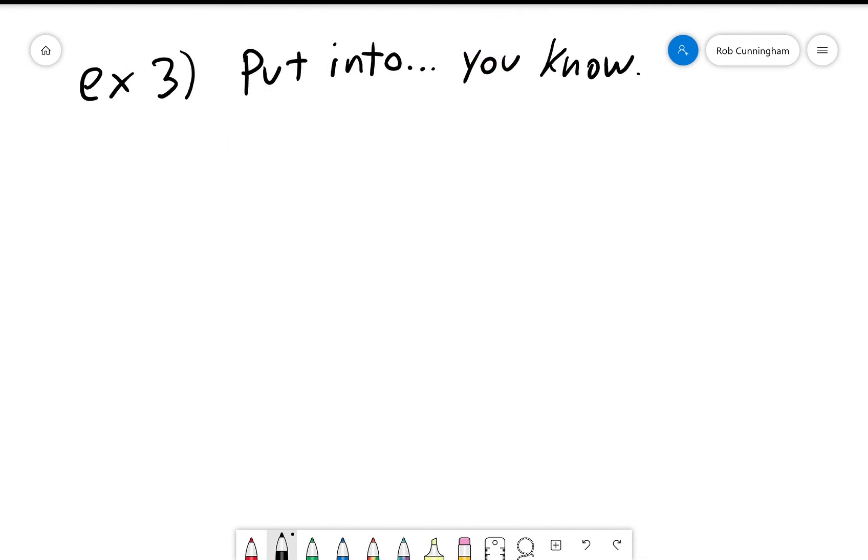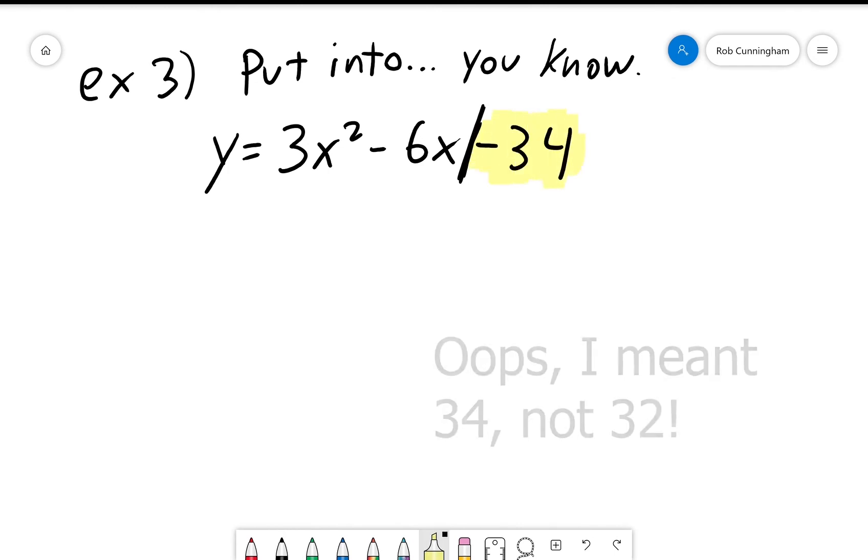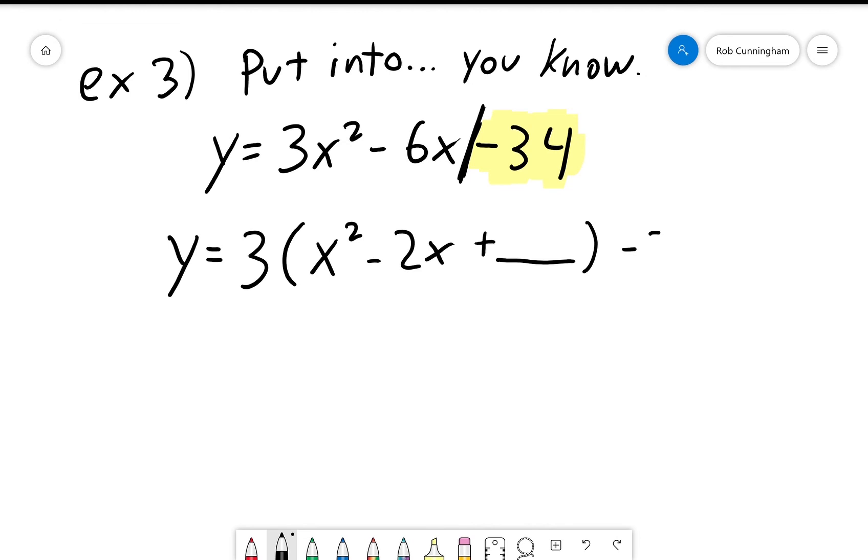Our next example will be y equals 3x squared minus 6x minus 34. So once again, I'm only going to look at the first two terms for the moment. I'll deal with this negative 32 a little bit later. So I'm going to factor that 3 out of the first two terms. So I get y equals 3 times x squared minus—let's see, negative 6x divided by 3 is negative 2x plus blank minus 34. As you can see, I'm focusing on finding and completing this square first, and then I'll deal with whatever other fallout I need to deal with after that.